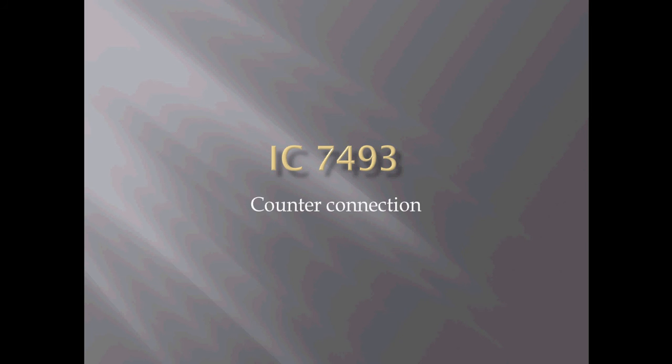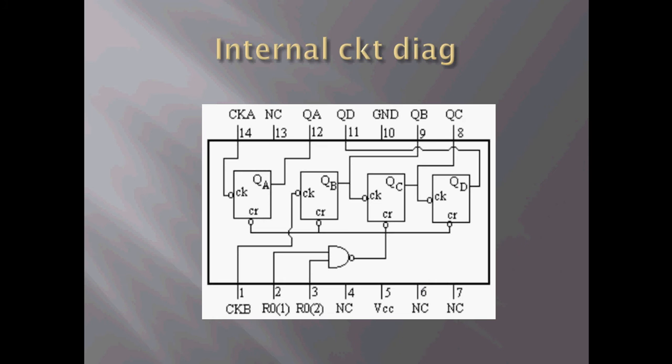This video is about IC7493 counter connection, how to use it as a mod 2 counter, mod 8 counter, and mod 16 counter. This is the internal circuit diagram of the chip. The chip has 14 pins and is made of 4 flip flops: A, B, C, and D. Pins 4, 6, and 7 are no connection. Pin 5 is VCC and pin 10 is ground.